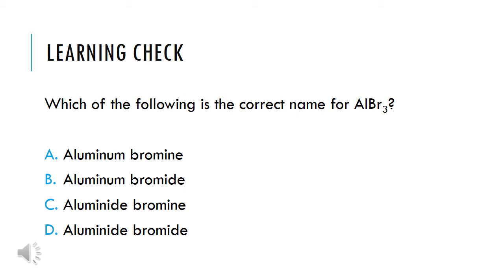Here's our first learning check. Which of the following is the correct name for AlBr3? What does AL stand for and what does BR stand for? Which one's the cation and which one's the anion? The correct answer is B, aluminum bromide. A is incorrect because bromine did not change to bromide. C is incorrect because we do not change the cation's name. And D is incorrect because both the cation and the anion are changed, when only the anion is supposed to be. So aluminum bromide is the correct name for AlBr3.